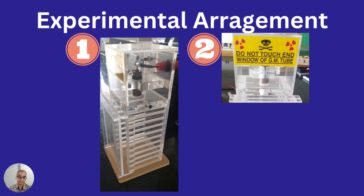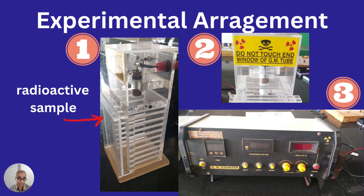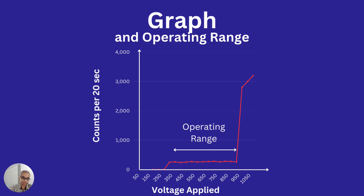You should be very careful during this experiment. Do not touch the end window of the GM tube, as there is always radioactivity directed towards it, and there is also high voltage at that end. The counter has a press button to set the voltage and start the count. Every time you record a count, you should reset the counter before the next observation.